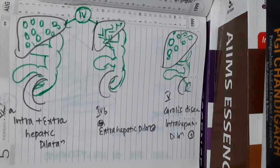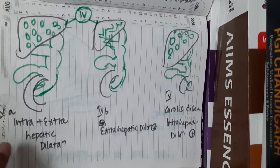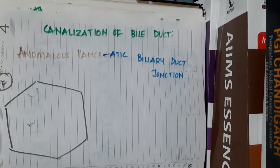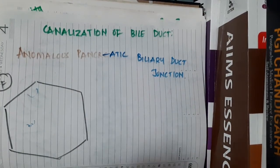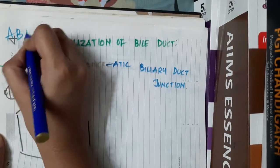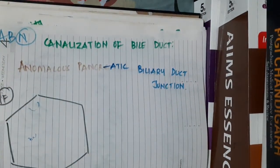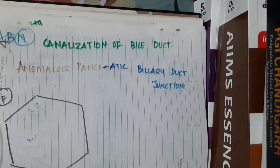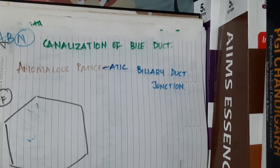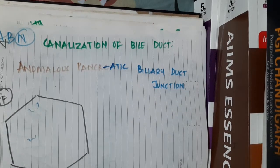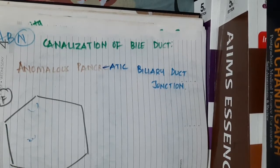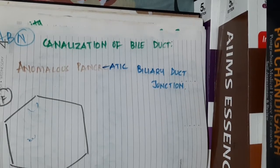Type 5 choledocal cyst is also called Caroli's disease. The main abnormalities seen in all choledocal cysts are abnormal canalization of the bile duct and anomalous pancreaticobiliary junction. These two hypotheses are considered the causes of choledocal cyst.